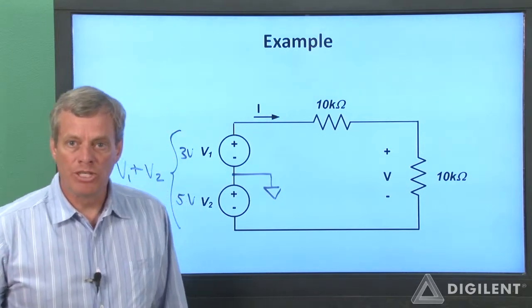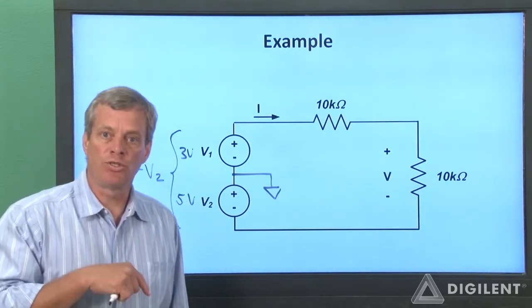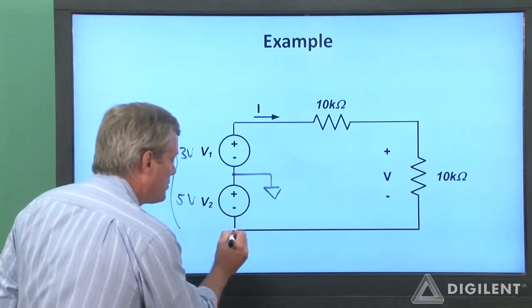We can do this either with a waveform generator set to negative 5 volts or with V minus on the voltage instrument. I'll choose V minus.